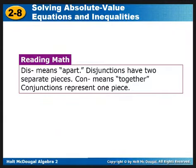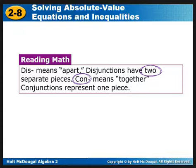Just some notes straight out of the textbook: the prefix 'dis' means apart, meaning that disjunctions have two separate pieces, and it only has to work for one of those two pieces. The prefix 'con' means together — a conjunction means the solution has to fulfill both parts of your inequality.